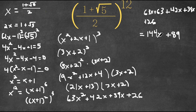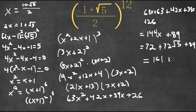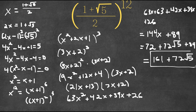And remember how we said x was equal to one plus the square root of five over two. So now if we plug this in for x, we get 144 times that quantity plus 89, which equals 72 plus 72 root five plus 89. And this is equal to 161 plus 72 root five. This is the most this can be simplified, so this is our answer.